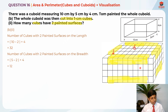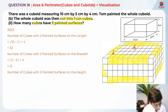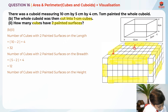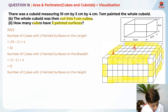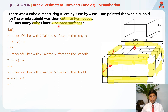For the height edges: the height is 4 cm. Excluding corner pieces: 4 − 2 = 2 cubes per edge. There are four height edges, so 2 × 4 = 8 cubes. To find the total number of cubes with exactly two painted surfaces, we add all of these up: 32 + 12 + 8 = 52.